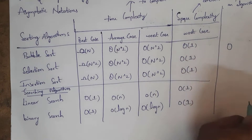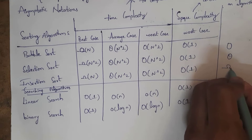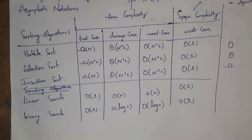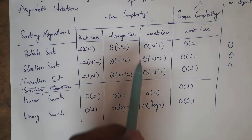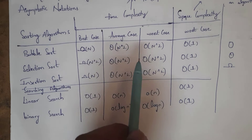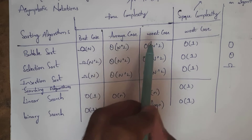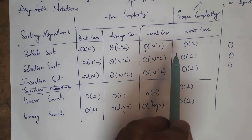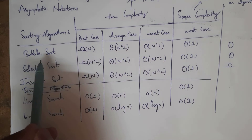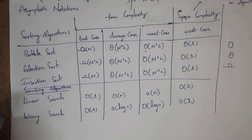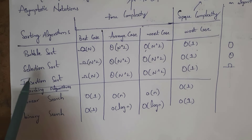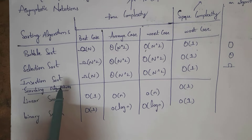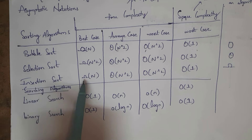We call it Big O, we call it Theta, and we call it Omega — you need to remember this. Best case time complexity of bubble sort is Omega of n, whereas average case time complexity of bubble sort is Theta of n squared. Similarly, worst case time complexity of bubble sort is Big O of n squared, and worst case space complexity of bubble sort is Big O of 1. Best case time complexity of selection sort is Omega of n squared, and best case time complexity of insertion sort is Omega of n.